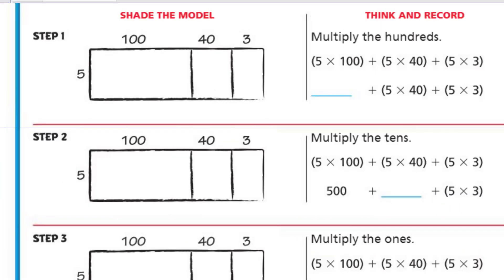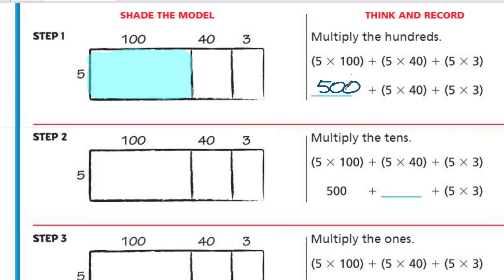Let's see what we need to do next. Now we're getting to where we have to show our mathematics. It says shade the model — let's see what we can do here. It says think and record, so we're going to shade the model. Let's do the hundreds first — we're going to shade the hundreds. Let me get a color and use my highlighter. So I'm going to put my 500 in here, because we're multiplying that now — we're showing 5 times 100.